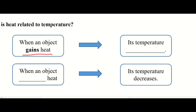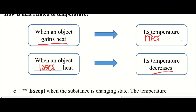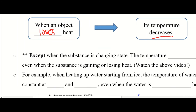Of course, when an object gains heat, its temperature will increase or rise. This one we all know — it's very intuitive. You turn on the flame and try to heat up water, you'd expect the water temperature to increase. The opposite: when an object loses heat, its temperature will decrease. So: gain heat → temperature rises; lose heat → temperature decreases.